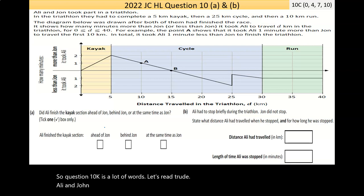So question 10 is a lot of words. Let's read through it. Ali and John took part in a triathlon, and they had to complete a 5km kayak, then a 25km cycle and then a 10km run. The diagram below was drawn after both of them had finished the race. It shows how many minutes more than John, or less than John, it took Ali to travel D km in the triathlon. And D is somewhere between 0 and 40.